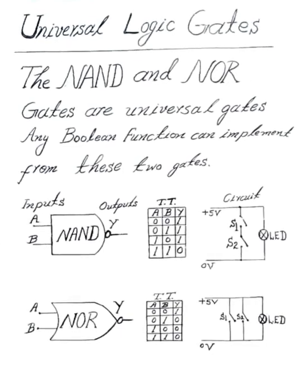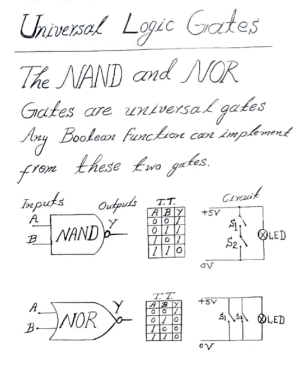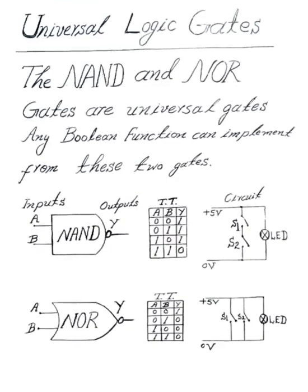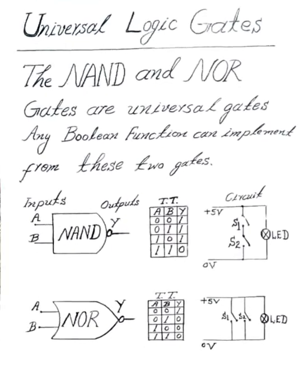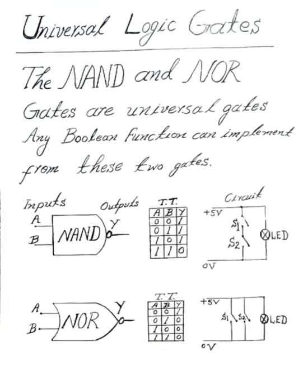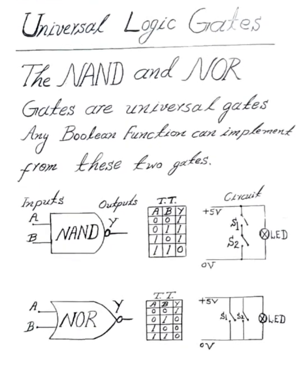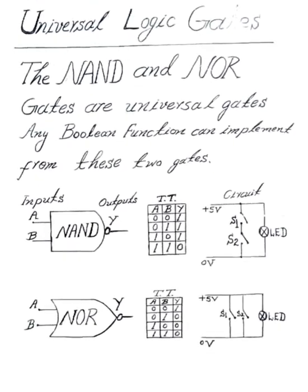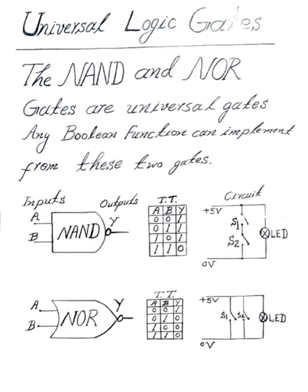In NOR gate truth table, when both input low, output high. But when any one of them input high or both input high, output Y low.